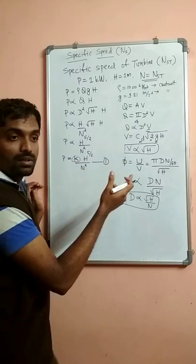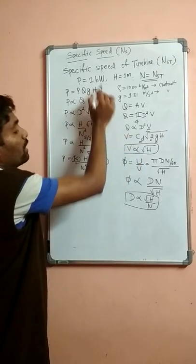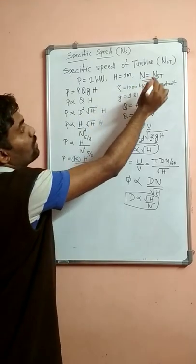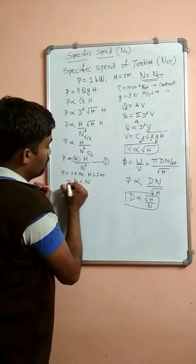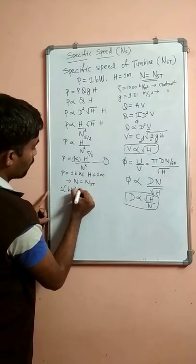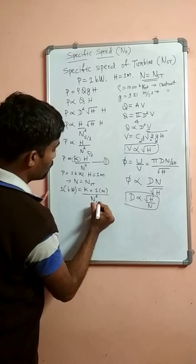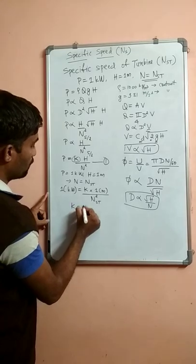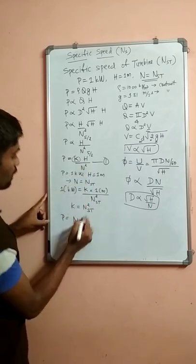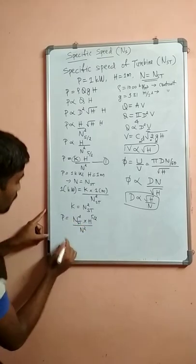The definition says it is the speed of a turbine which is geometrically similar and reduced in size compared to the actual turbine, which is generating 1 kilowatt power at a working head of 1 meter — then we call the speed of the turbine as Specific Speed, N-S-T. Substituting these values by the definition into the equation, working head H equals 1 meter, and this speed N becomes N-S-T. So we get the value of K, which is N-S-T square.